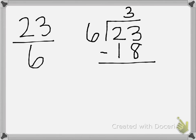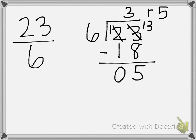3 take away 8 — we cannot do that, so we need to go to the tens place and borrow 10. This 2 tens becomes 1 ten, and this 3 ones gets 10 added to it, so it becomes 13 ones in our ones place. 13 take away 8 is 5, and 1 take away 1 is 0. We have a remainder of 5 because 6 cannot go into 5. So we have a quotient of 3 and a remainder of 5.